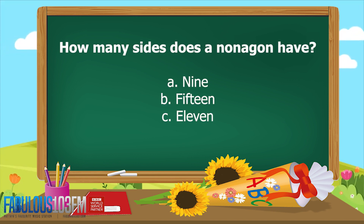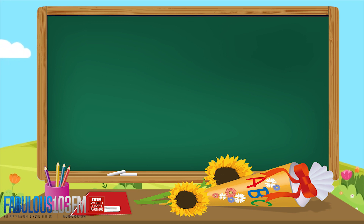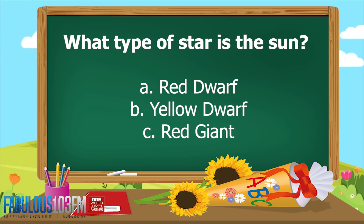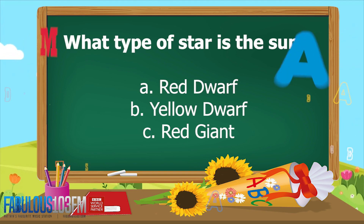And the last question for today: the Sun is which type of star? A) red dwarf, B) yellow dwarf, or C) red giant? I'll give you some time to think about those.